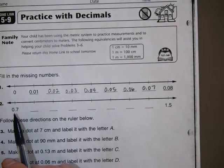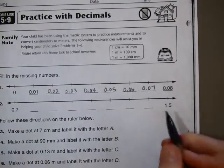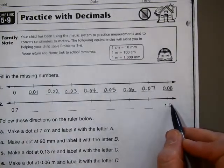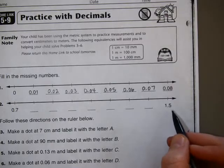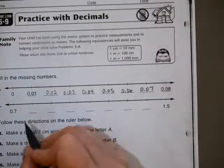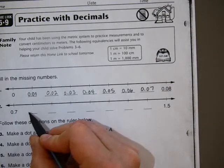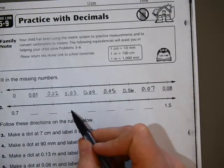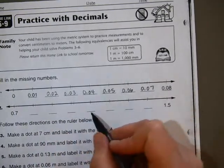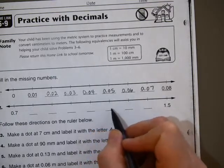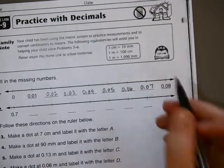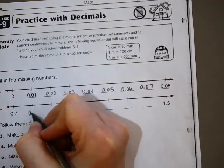And for this one, I notice it's starting in tenths, and it goes to 1 and 5 tenths, or 1.5, or 1 and a half. I'm going to try counting by tenths: 0.8, let's see, 8 tenths, 9 tenths, 10 tenths, or 1. And then, 1.1, 1.2, 1 and 3 tenths, 1 and 4 tenths. I think that will work.